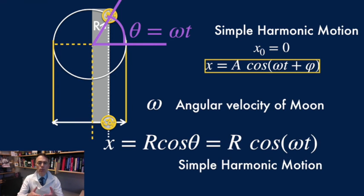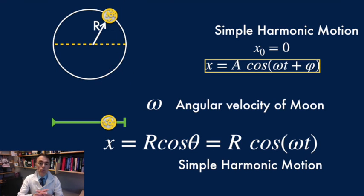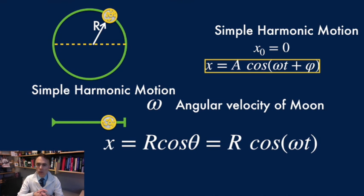Which happens to describe a simple harmonic motion. So the one-dimensional projection of the two-dimensional motion of the moon about the earth is a simple harmonic motion.